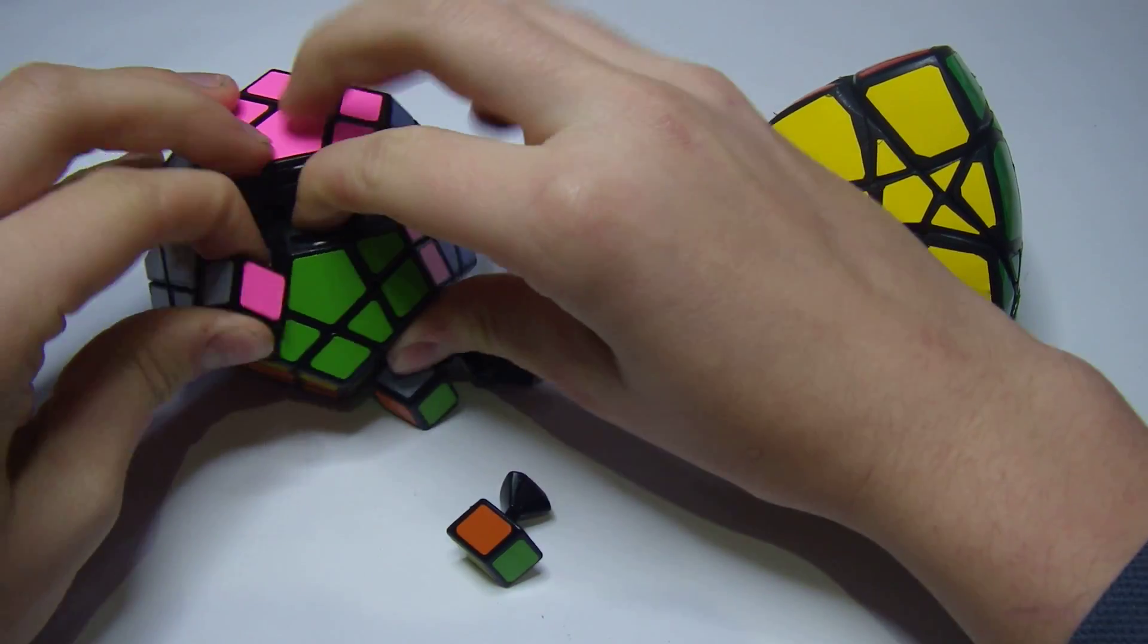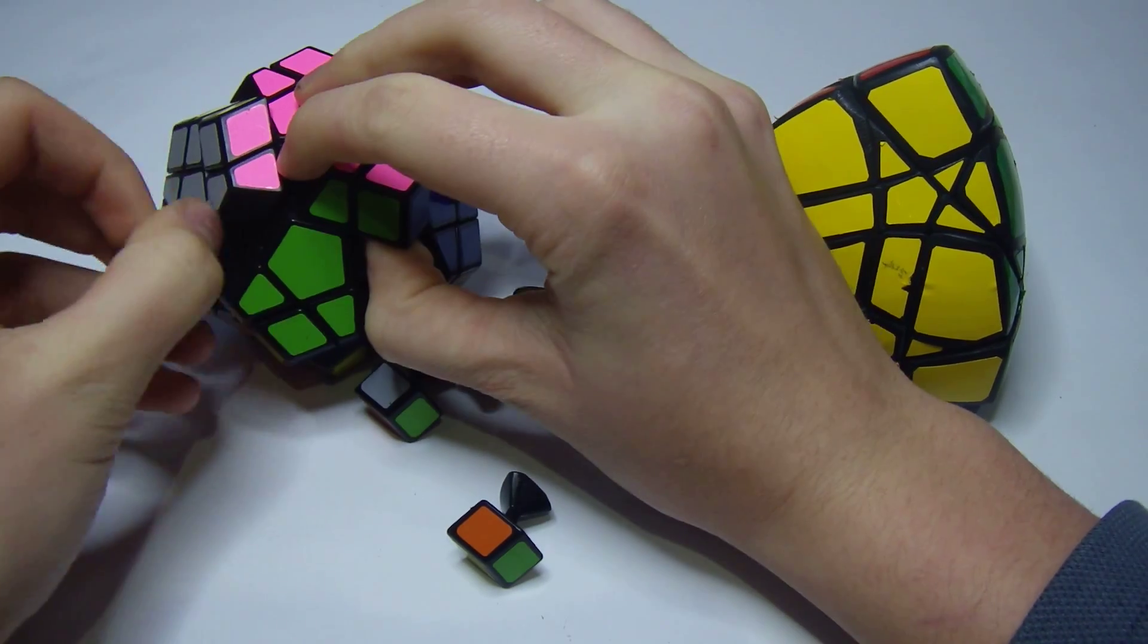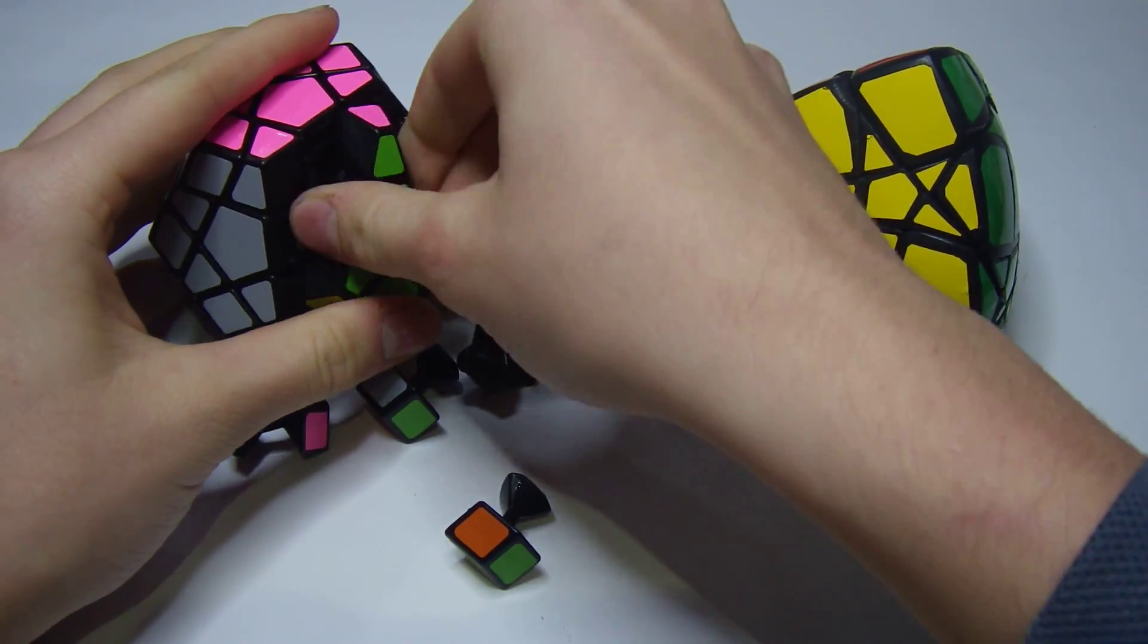You can see, pretty standard, we all know what the inside of a Mega Minx looks like. We've got our corners and edges now.